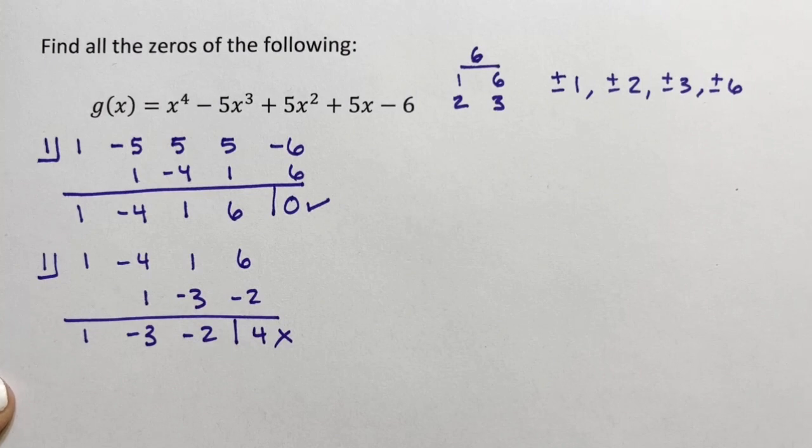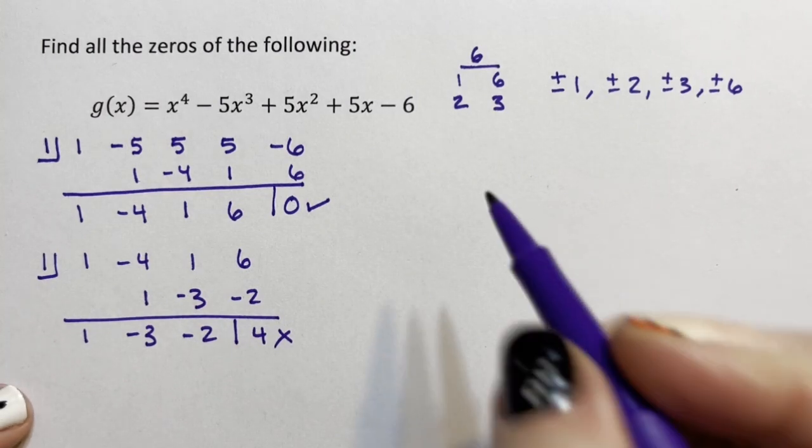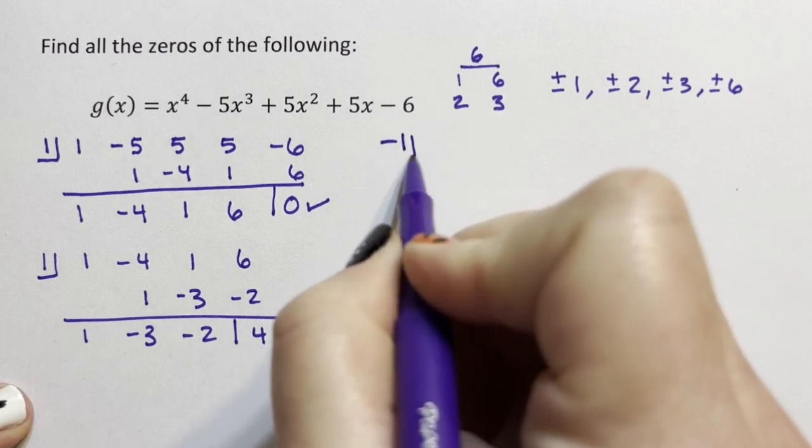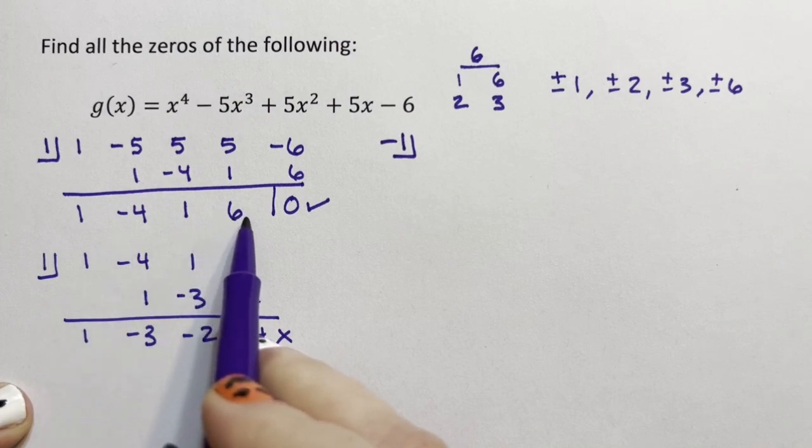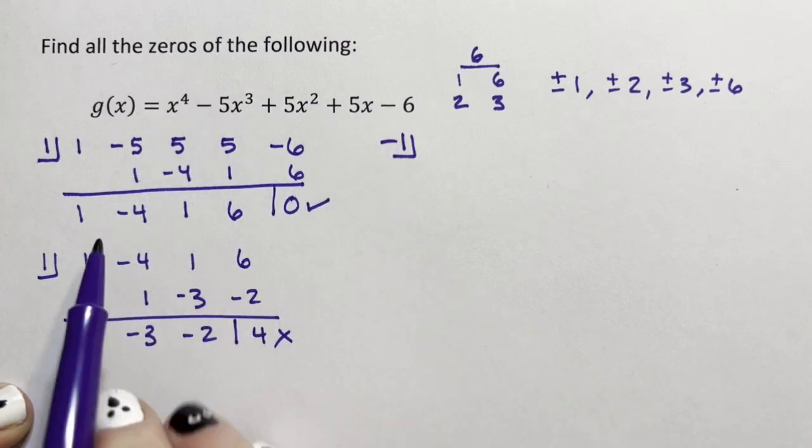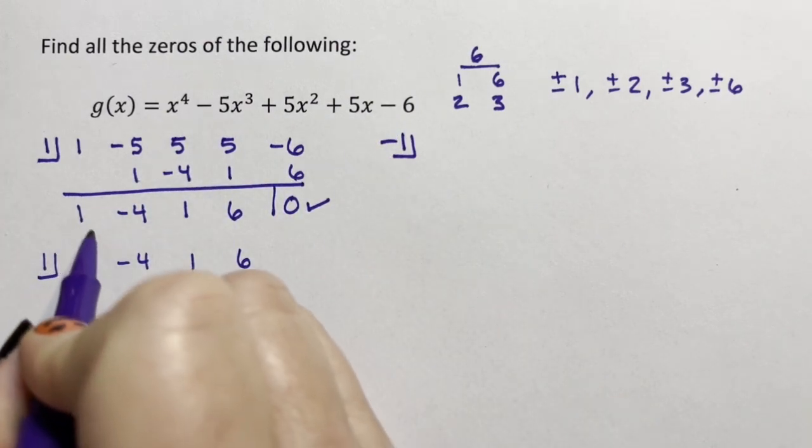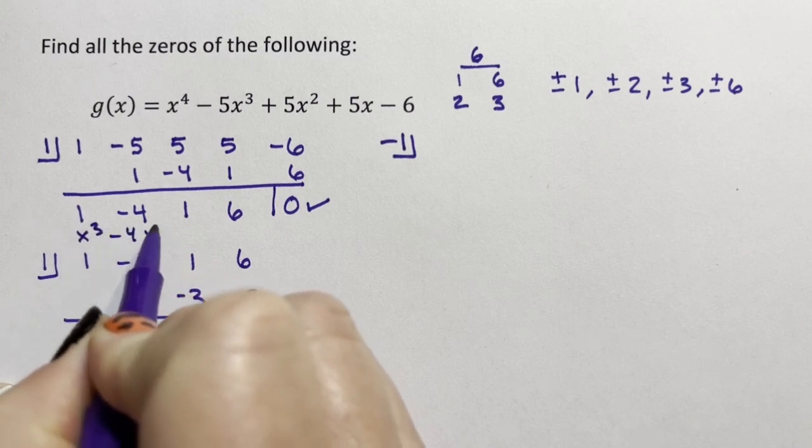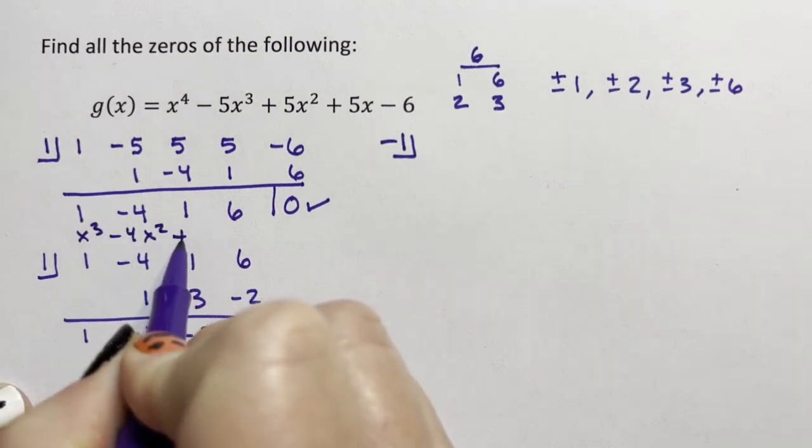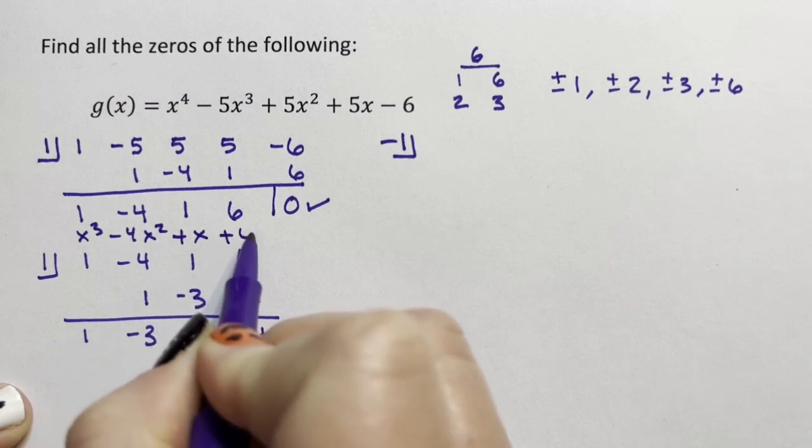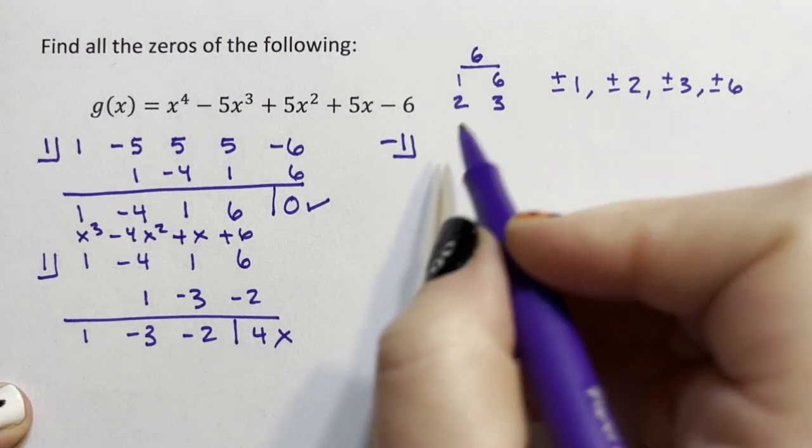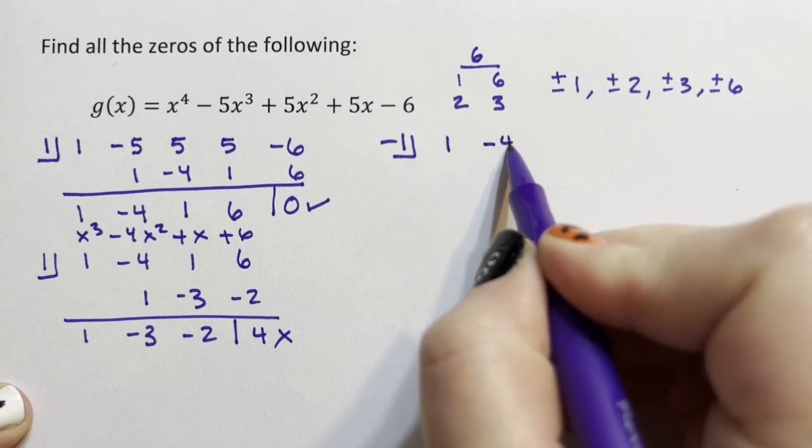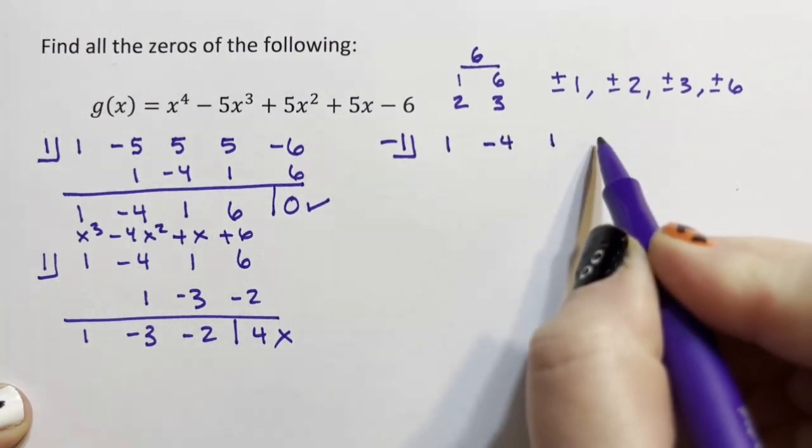What about negative 1? And notice I used my new polynomial. I didn't start with the big one. This polynomial right here is the equivalent of x³ - 4x² + x + 6. That doesn't look like it could be factored by grouping, so I'm going to continue with this. So let's see: 1, -4, 1, 6.